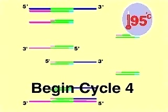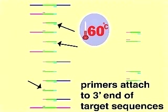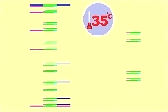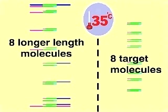At cycle four, the DNA strands are melted, the primers anneal, and the DNA strands are copied as in the previous cycles. Eight copies of the target molecule and eight longer molecules are produced.